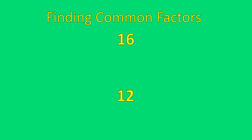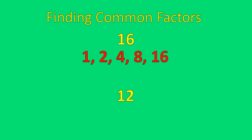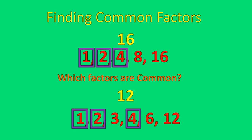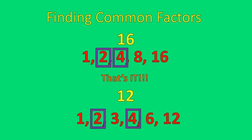Let me show you an example with 16 and 12. First, list all the factors. 16 has factors 1, 2, 4, 8, and 16 — you can see those in a rainbow pattern: one times 16, two times 8, four times 4. 12 has factors 1, 2, 3, 4, 6, and 12. Now identify which are common: 1, 2, and 4 appear in both. Since 1 is always a common factor, it's not very helpful, so we won't focus on it. That's how you find common factors — list the factors and pick out the ones that match.